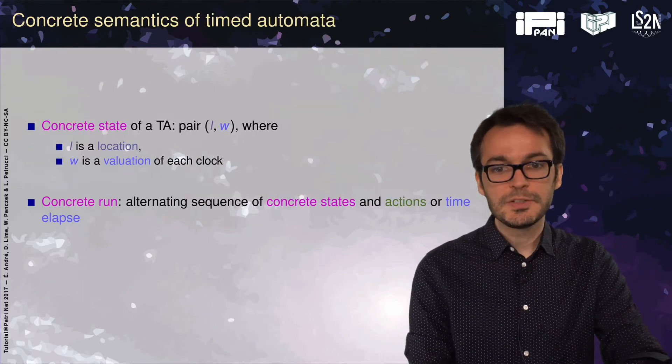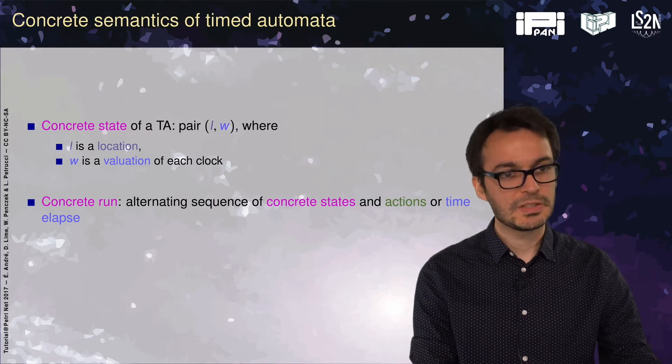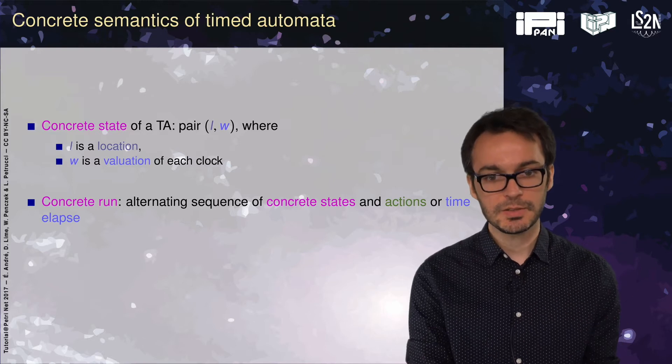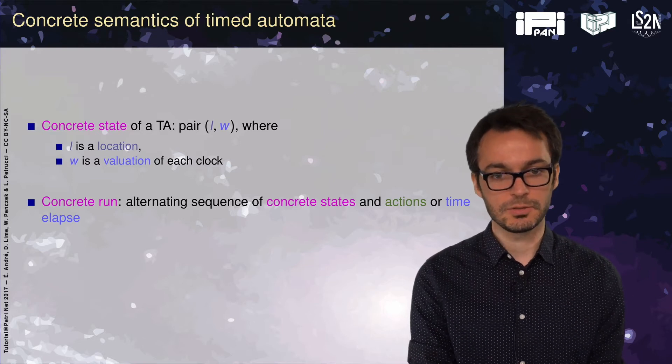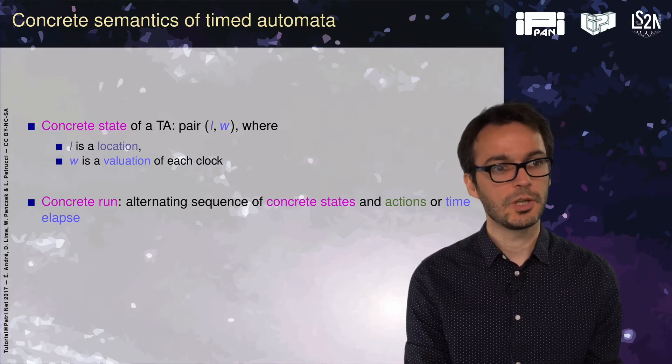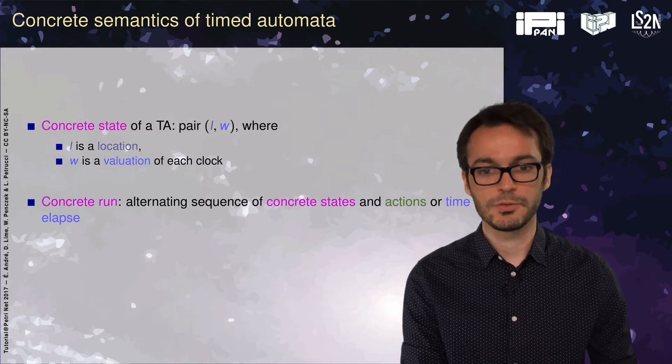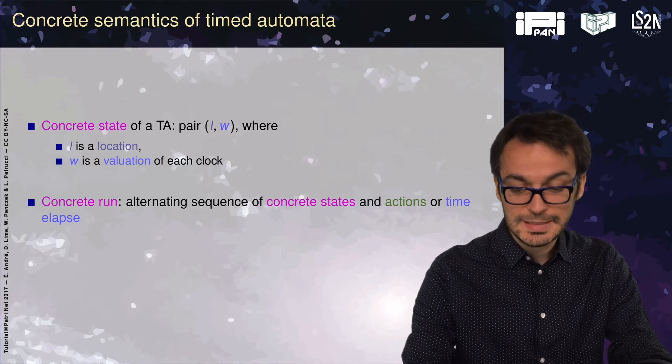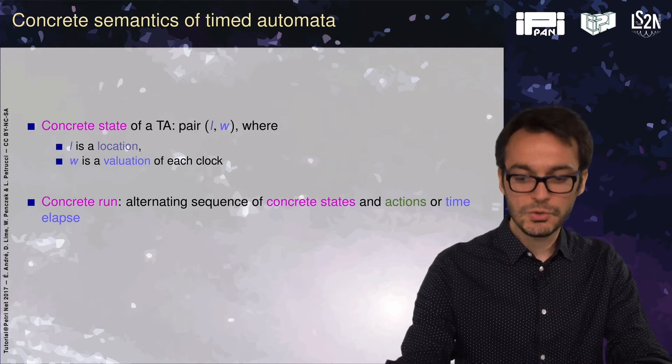What is the concrete semantics of timed automata? A concrete state would be a pair with a location, the discrete part, and a clock valuation with a real-valued value for each clock. A concrete run would be an alternating sequence of concrete states and either actions or time elapsing.